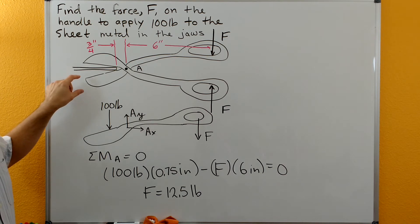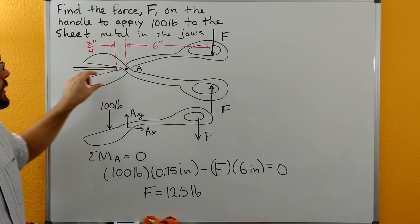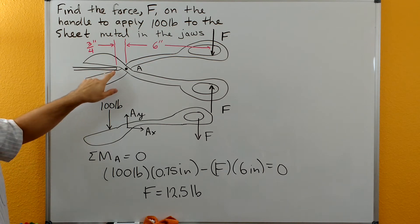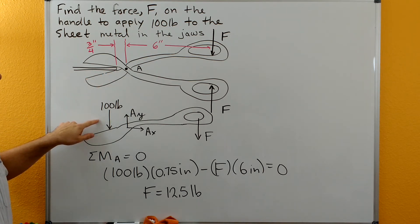So let's look at one portion now of our machine. We're going to look at this lower jaw here where we're contacting the sheet. We have the hundred pound force going down.